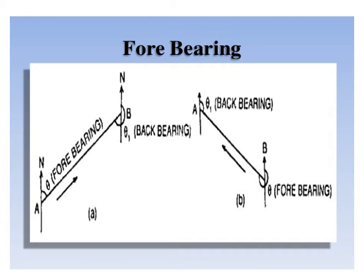In figure B on the right part, it refers to survey line BA. The angle theta represents the forward bearing of the line, whereas at station A, the angle theta 1 measured is the back bearing of line BA, not AB.